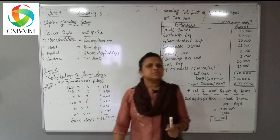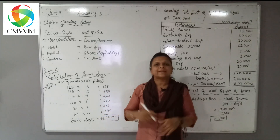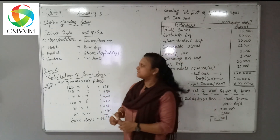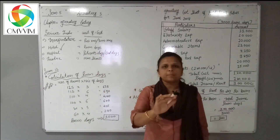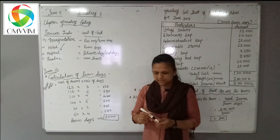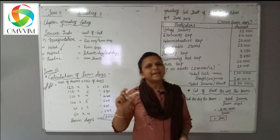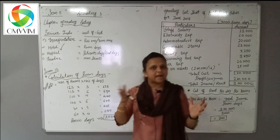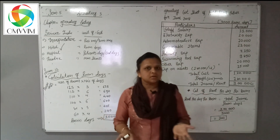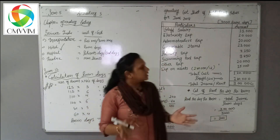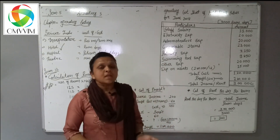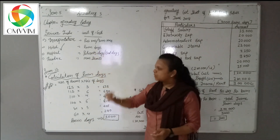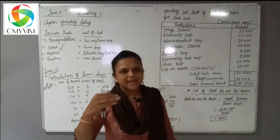Once again, operating costing means the method of costing for establishing the cost for service provider industries. Today in this lecture, we have to study only the operating costing for hotel industries. In hotel industries, the expenses include all sundry expenses like staff, electricity, swimming pool expense, depreciation on assets, and any other services.